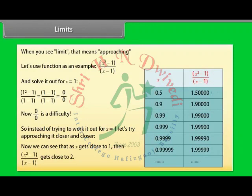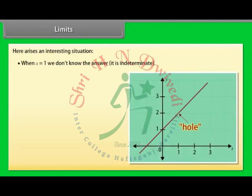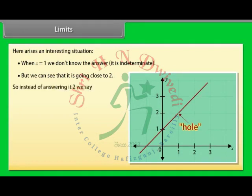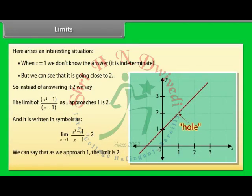We can see that as x gets closer to 1, then x squared minus 1 by x minus 1 gets close to 2. When x equals 1, we don't know the answer — it is indeterminate — but we can see it is going close to 2. So instead of answering it as 2, we say the limit of x squared minus 1 by x minus 1 as x approaches 1 is 2. Written in symbols: limit x tends to 1 of (x² - 1)/(x - 1) = 2. We cannot tell the value at x = 1, but we can say that as we approach 1, the limit is 2.